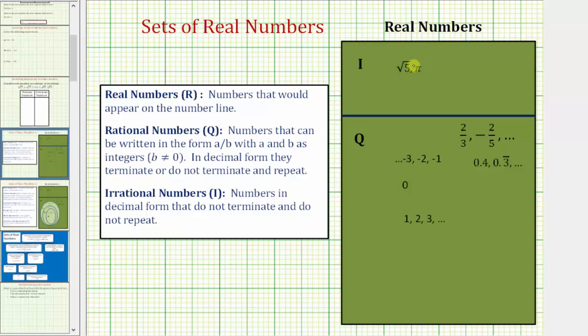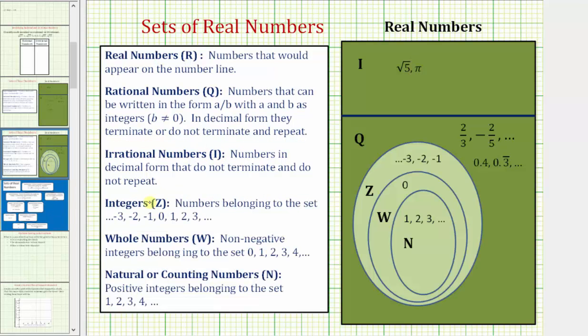There are additional sets of numbers. There are also integers, whole numbers, and natural counting numbers, but all these are also rational numbers.